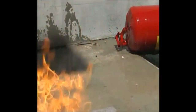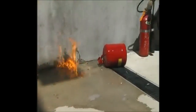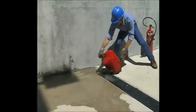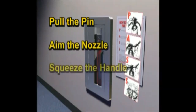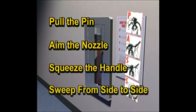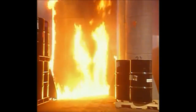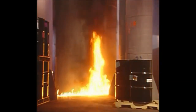If a fire occurs that is small enough to fight with a portable fire extinguisher, make sure you use the right extinguisher for the type of fire you're fighting and that you know how to use it properly. Remember the PASS system: pull the pin, aim the nozzle, squeeze the handle, and sweep from side to side at the base of the flames. If the fire becomes too large or you start to run out of extinguishing agent, evacuate the area immediately.